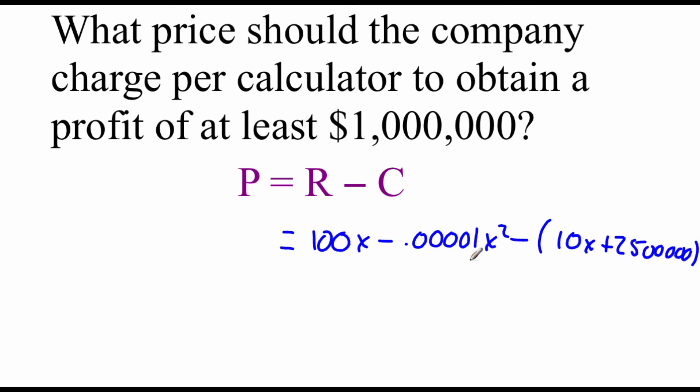Now, we are going to have to simplify this down a little bit. I'm going to distribute this negative so that we can combine like terms. So if we look at combining like terms and moving some things around, I'm going to rearrange this at the same time. Negative .00001X squared. Just pulling that X squared term out in front. If we take 100X and subtract 10X, we get plus 90X. And we don't have anything to combine with this negative $2,500,000.